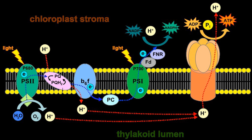Purple bacteria contain a single photosystem that is structurally related to PS2 in cyanobacteria and chloroplasts. This is a cyclic process in which electrons are removed from an excited chlorophyll molecule, passed through an electron transport chain to a proton pump similar to the chloroplastic one, and then returned to the chlorophyll molecule. The result is a proton gradient, which is used to make ATP via ATP synthase. To make NADPH, purple bacteria use an external electron donor — hydrogen, hydrogen sulfide, sulfur, sulfite, or organic molecules such as succinate and lactate — to feed electrons into a reverse electron transport chain.